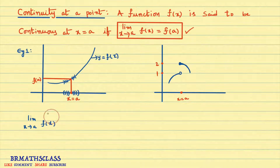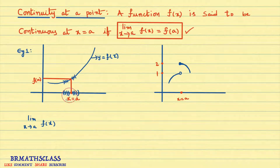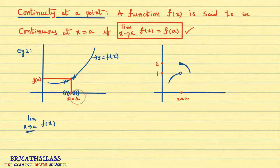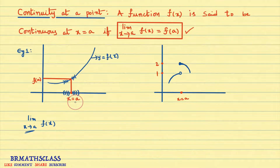What does it mean that the limit exists? This is the same concept we discussed in the first class. Limit x tends to a of f(x) exists means: when x approaches to a from left and right, the function also approaches a particular value. x approaches to a means all x values are very, very nearer to a — some less than a, some greater than a — but x is not equal to a.